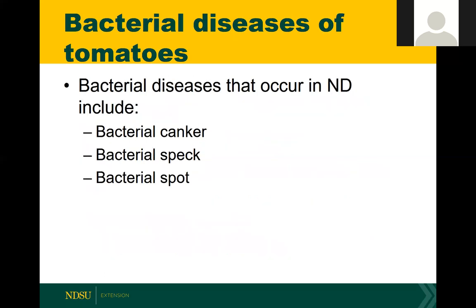That's all I'm going to mention for fungal diseases. In general, whenever you're trying to manage those diseases, it's really best to try the non-chemical controls first. If you can achieve control with those, great. If not, then it might be a good idea to start thinking about using a fungicide. Now I'm going to talk about bacterial diseases of tomatoes — I'll talk about what all three of them look like, and then give general management for all of them together.